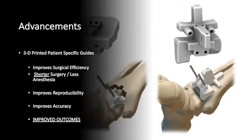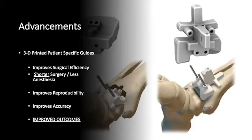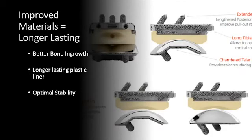Along with this are the 3D-printed guides that come with preoperative planning. This improves our efficiency, surgical time, and reproducibility. If we can decrease the variability and improve the reproducibility, we're going to do a better surgery. It's about reps — if we can do this more accurately and precisely every time, our implants are going to go in better and last longer. Our materials are also better, allowing for better bony ingrowth, greater longevity, and improved stability.